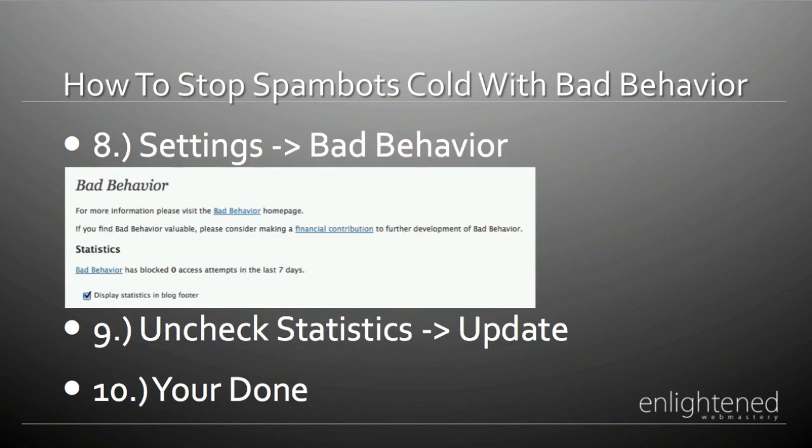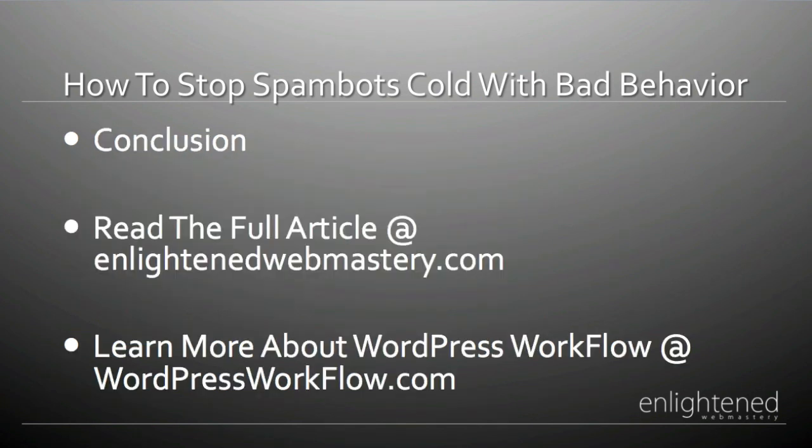Next, go back to your dashboard. On the left-hand side, scroll down until you find the Settings option and choose Settings for Bad Behavior. The default settings are really great and I highly recommend leaving them alone unless you have specific reasons to change them. The one thing I do recommend changing is Display Statistics in Blog Footer — if you leave this checked, your home page footer will show a line of text saying Bad Behavior. If you don't want that, uncheck it, scroll down, click the Update button, and you're done.